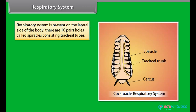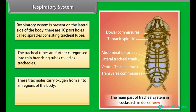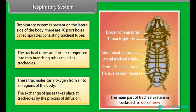The respiratory system is present on the lateral side of the body. There are ten pairs of holes called spiracles, consisting of tracheal tubes. The tracheal tubes are further categorized into thin branching tubes called tracheoles. These tracheoles carry oxygen from air to all regions of the body. The exchange of gases takes place at tracheoles by the process of diffusion.